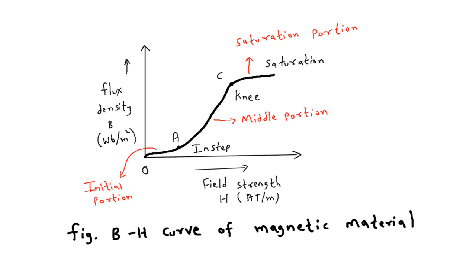Also remember, if the core shape is straight it is called a solenoid, and if the core shape is circular it is called a toroid.